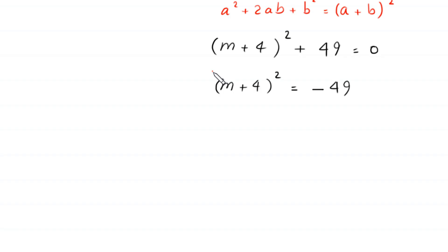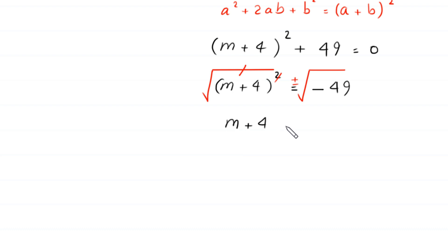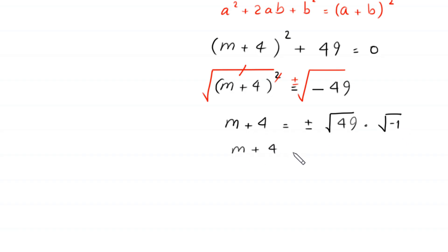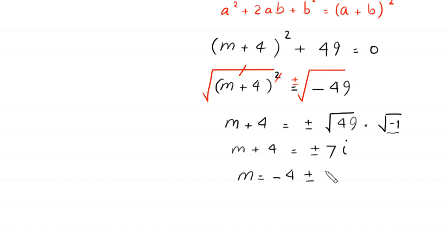Taking the square root of both sides, m + 4 = ±√(-49) = ±√49 × √(-1) = ±7i. Moving 4 to the right-hand side gives m = -4 ± 7i.